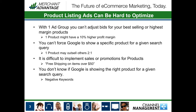Also you can't force Google to show a specific product for a given search query. So if you have a jacket that is outselling your others by a two-to-one margin, you can't send that one out more because it all has the same bid and is on the same rotation.